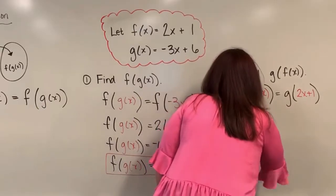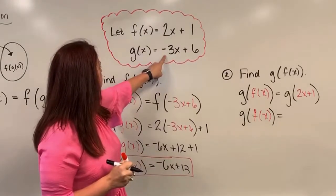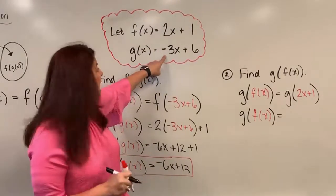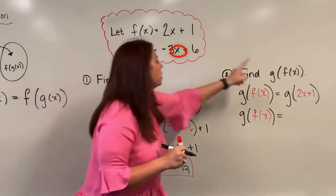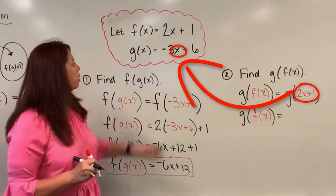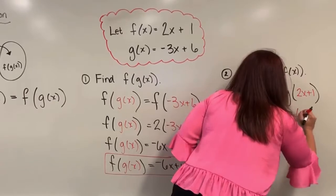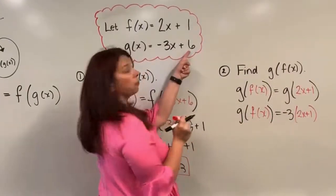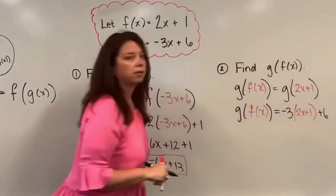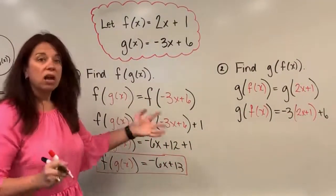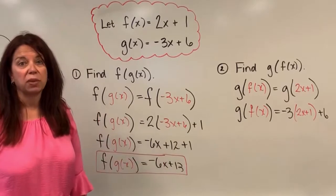Now what that does is that tells me take the 2x plus 1 as a new input and plug it into, substitute it into the function g. So if I do this, I have g of f of x is equal to, here's my function g of x. Again, it's defined as negative 3x plus 6. Everywhere I see an x, I'm going to substitute in this new function 2x plus 1. So when I do that, I end up with negative 3 times my 2x plus 1. But don't forget, I still have to add 6. So now I'm going to add 6 to that.